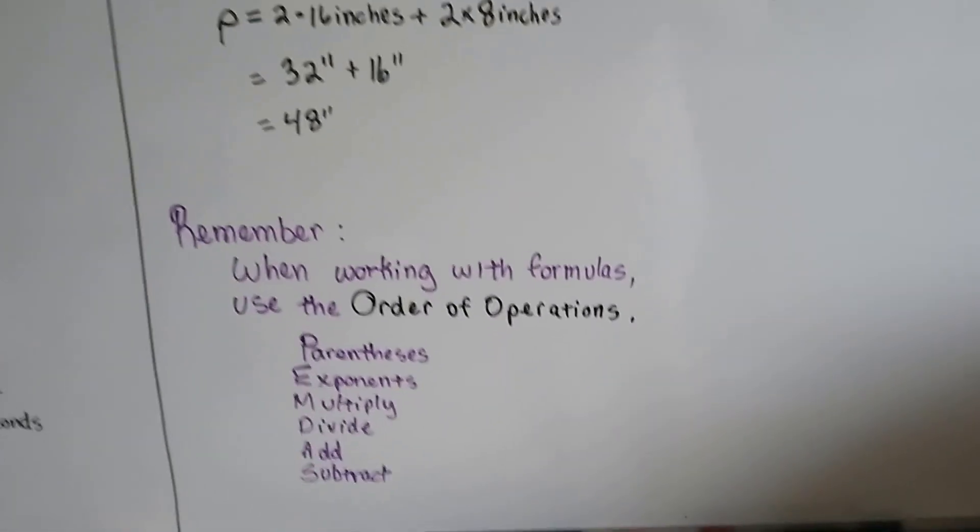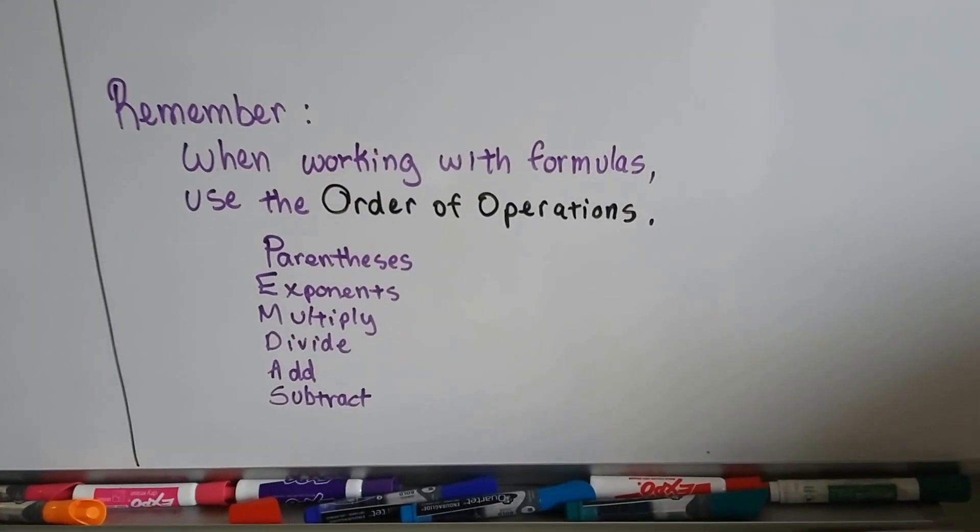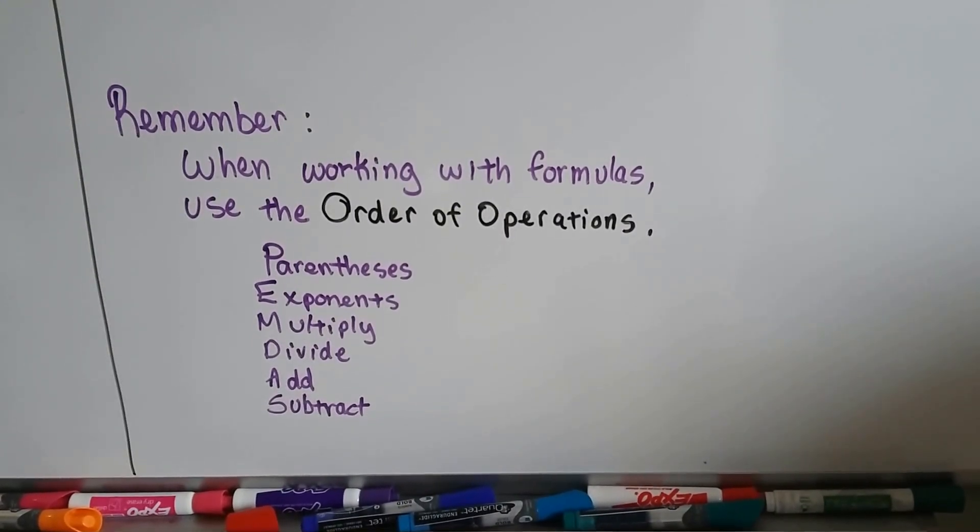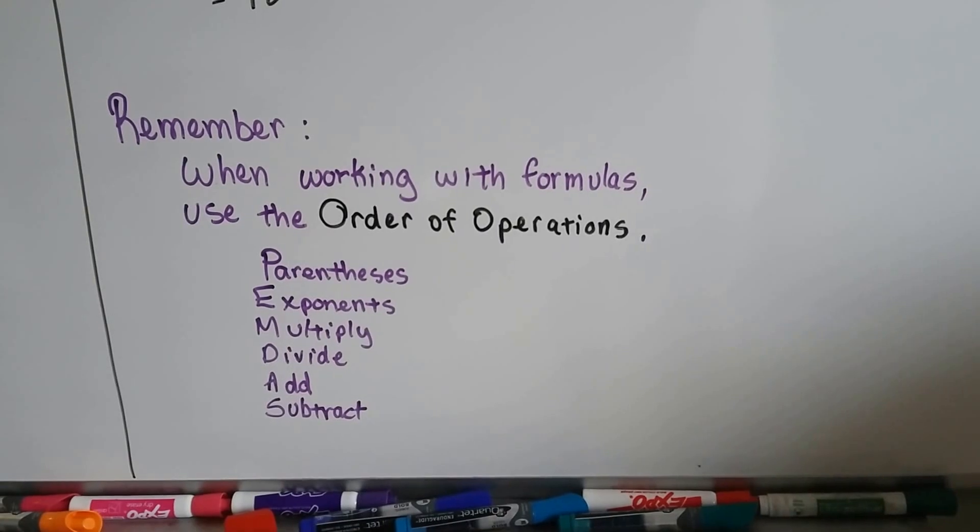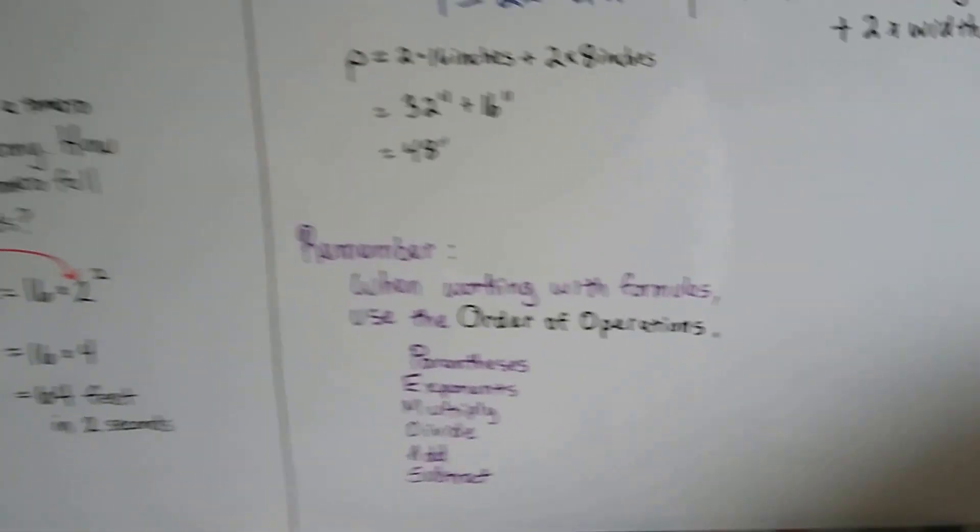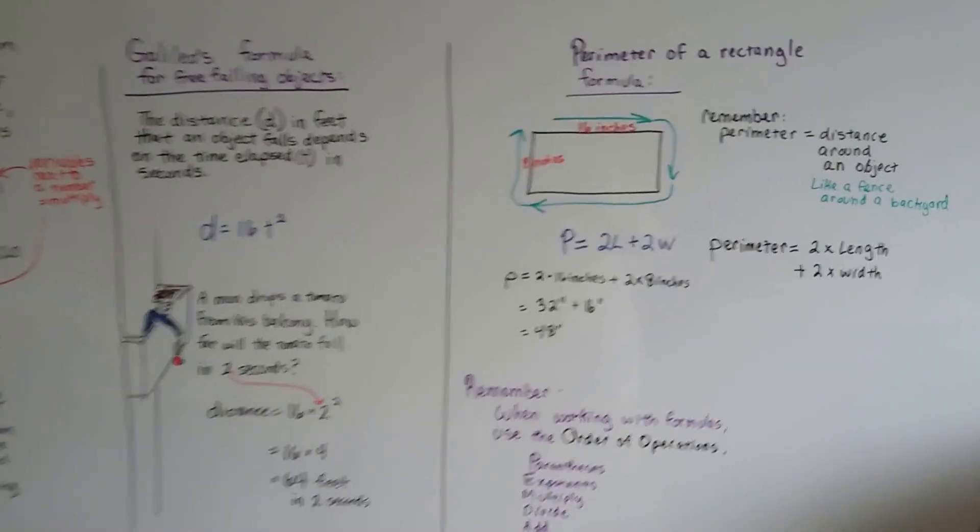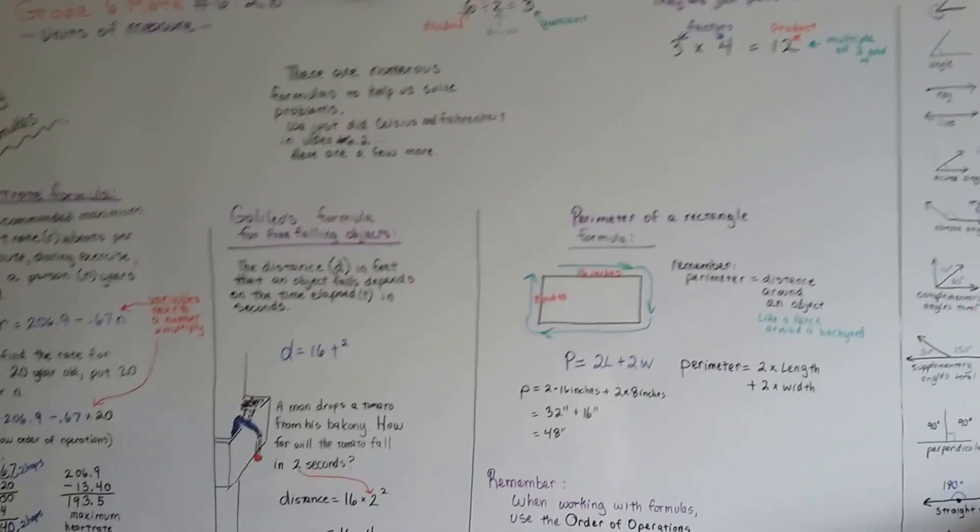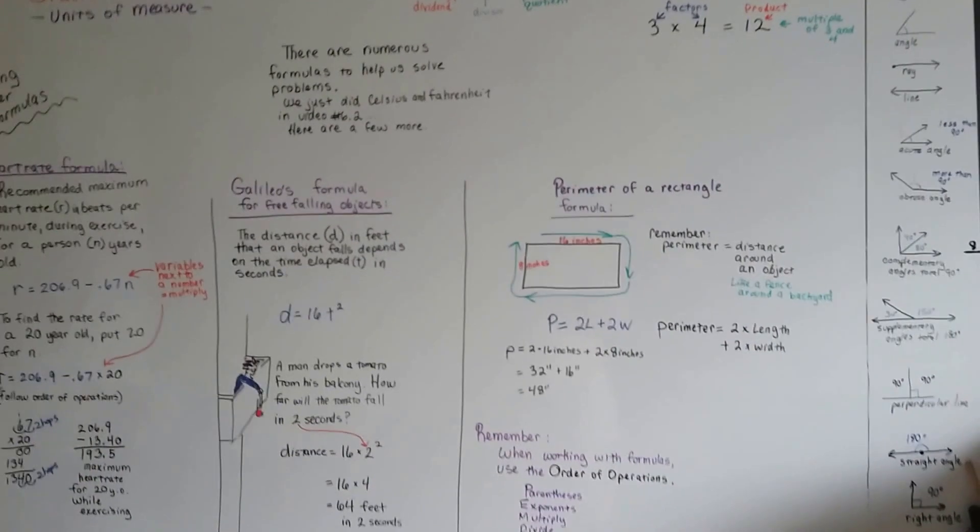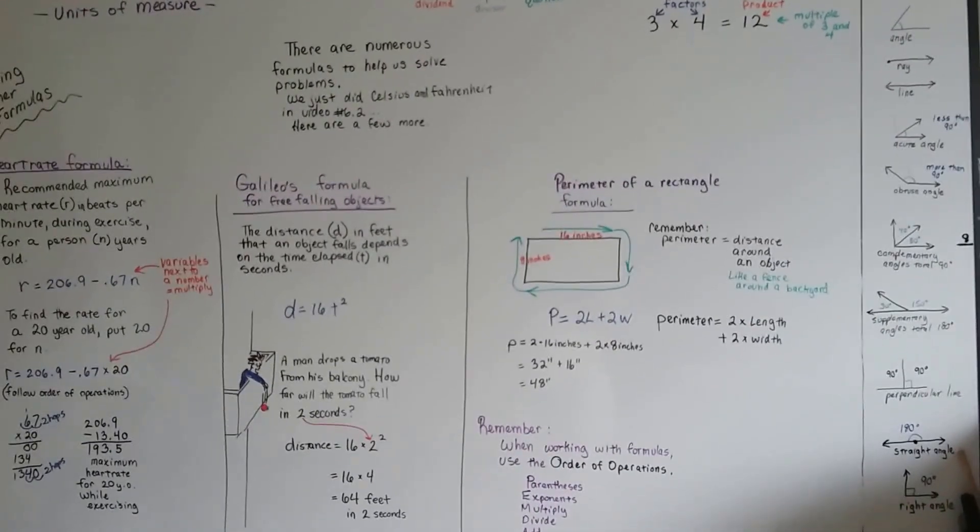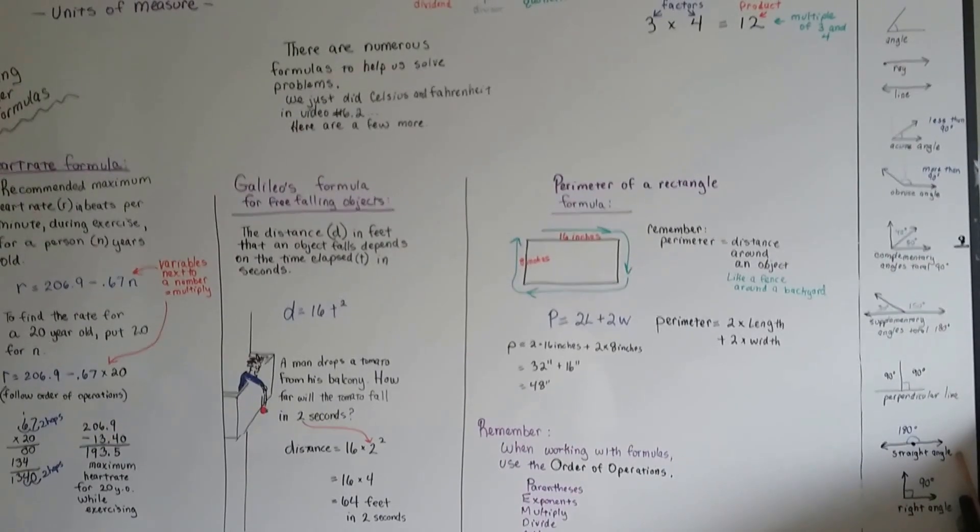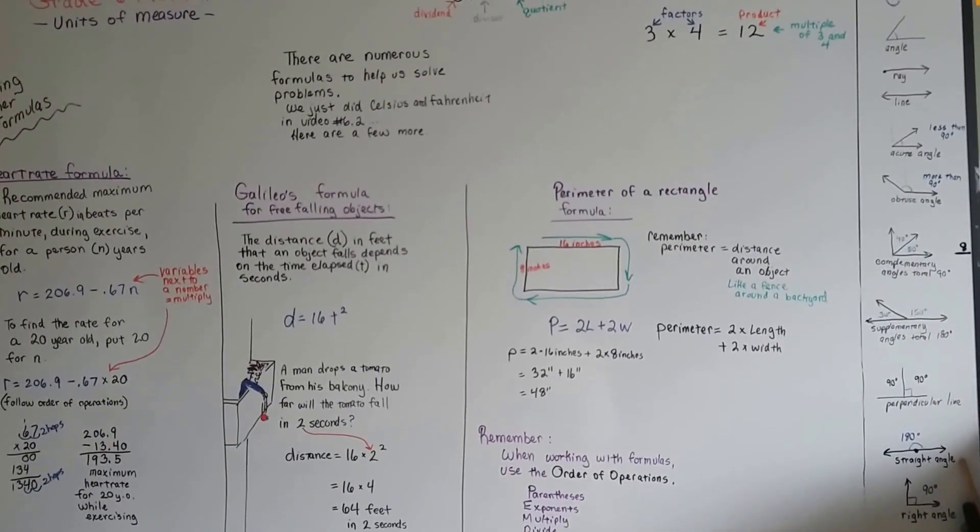So remember, when working with formulas, we use the order of operations. Remember, parentheses first, then exponents, multiply, divide, add, subtract, last. PEMDAS. So you can try these formulas on your own. I know there's some work in the book, and for those of you who are not using the GoMath 6th grade book, I'm sure these will be helpful to you too. Keep up the good work. Keep plugging along. Progress is being made, and I'll see you next video. Bye!